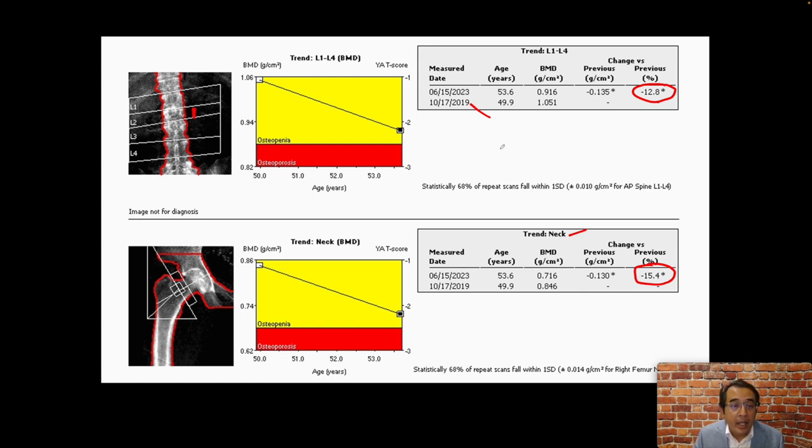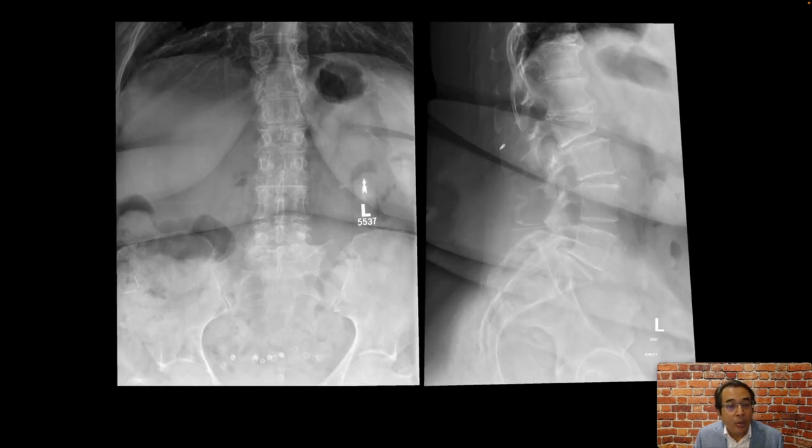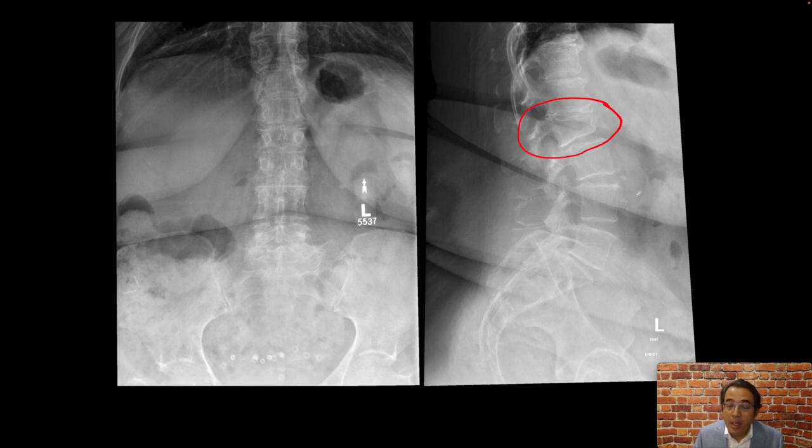So this patient has a compression deformity involving L2 vertebral body, and so plain film correlation was recommended. These plain films show that this is the L2 vertebral body showing a wedge deformity. So this patient already has an insufficiency fracture from their low bone mineral density.